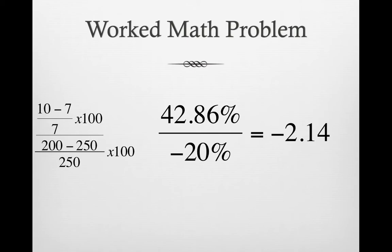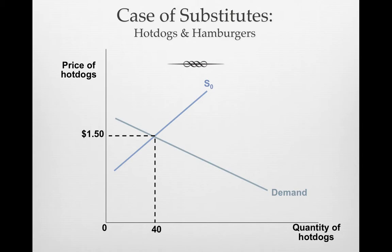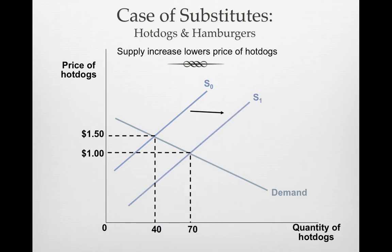Let's do one more example — this time with substitutes. Say the price of hot dogs drops, maybe because pork gets cheaper, which is a key ingredient. That causes the supply curve to shift right and the price of hot dogs to drop from $1.50 to $1.00. People were purchasing 40 hot dogs at $1.50, but now they're purchasing 70. So more hot dogs are being purchased.